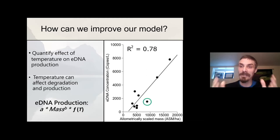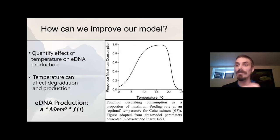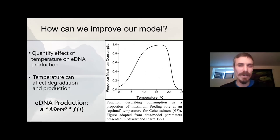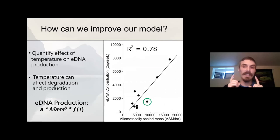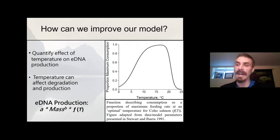I want to highlight this point, which is the largest negative residual in our ASM-eDNA concentration relationship. The other eight lakes had temperatures between nine and 16 degrees Celsius when we collected eDNA — less eDNA than we would expect based on fish abundance alone. Looking at the temperature dependency function for salmonids, between eight and about 16 degrees there's not a lot of variation in total feeding rate. But this single data point is Temple Lake, which was four degrees Celsius when we sampled it. At four degrees, consumption rates drop off dramatically. I think that might account for that large negative residual associated with that ecosystem.